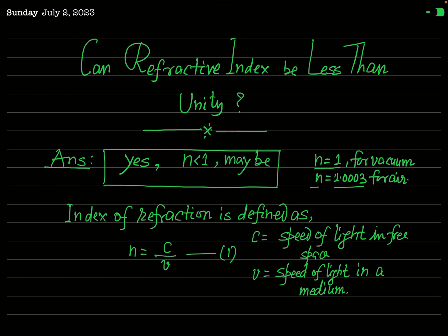As you know, basically the refractive index of a medium is defined by the ratio c by v. That is, if you denote the refractive index of a medium by the symbol n, you define it as n = c/v, where c is the speed of light in free space or vacuum and v is the speed of light in the medium for which you are defining this refractive index.